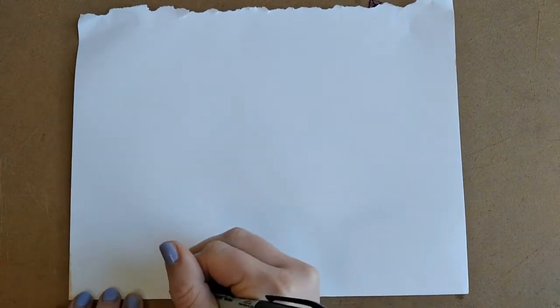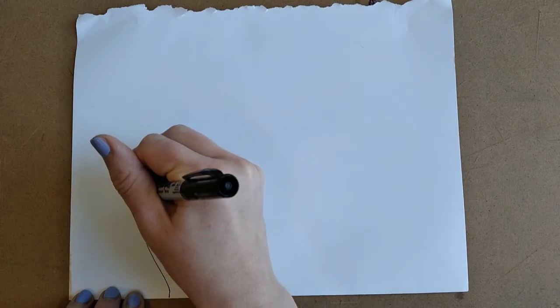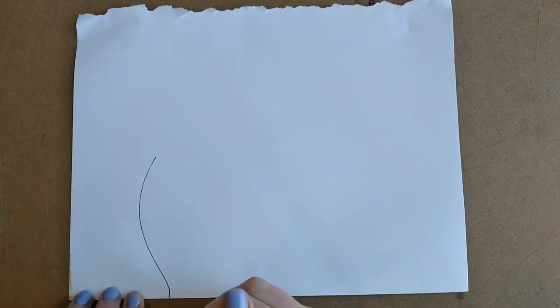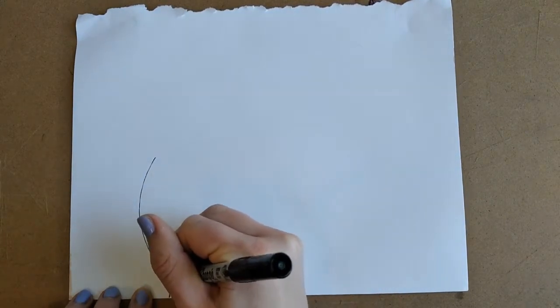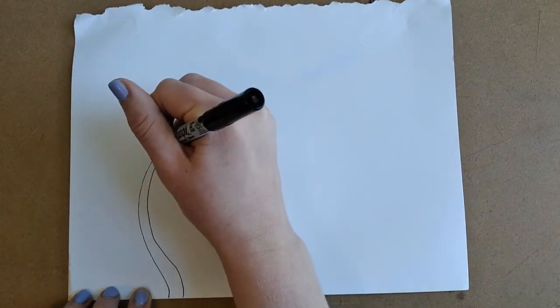First, start about a quarter of the way into your paper. We're going to start with our milkweed plant, so we're going to start with a big stem that reaches up towards the sky, drawing a second line that also reaches towards the sky.